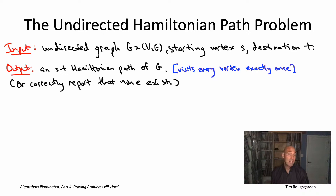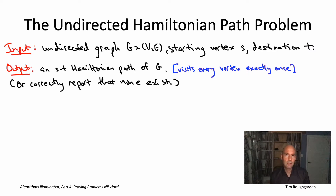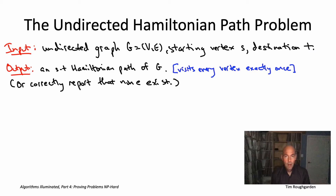We haven't actually proved NP-hardness for the undirected version of the problem, but as mentioned in the overview video, there are quite easy reductions back and forth between the directed and undirected versions of Hamiltonian paths. So by virtue of the directed Hamiltonian path problem being NP-hard, so is the undirected version — I'll leave the details as an exercise.